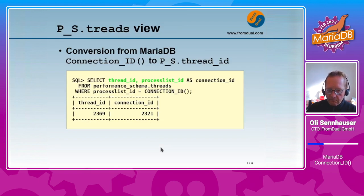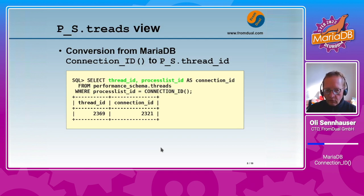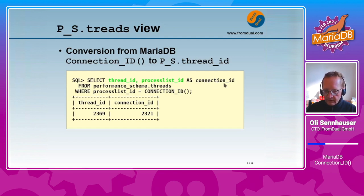So that was the InnoDB monitor. Where else can we find information about connection IDs? The next thing is the performance schema threads view. Here we have to do the conversion between the MariaDB connection ID and the performance schema thread ID. In this query on the performance schema threads view, we want to see the thread ID and the process list ID — I have renamed the process list ID to connection ID, which is technically the more correct term.